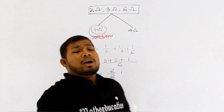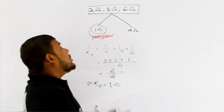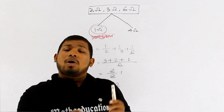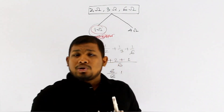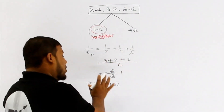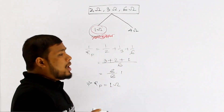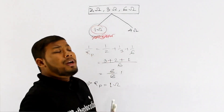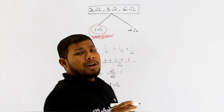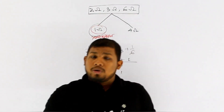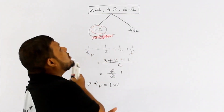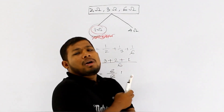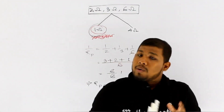So if we have to find the equivalent resistance, we find that R_P equals 1 ohm. If you have to solve this question, the resistors are 2, 3, and 6 ohm. Please write this down.